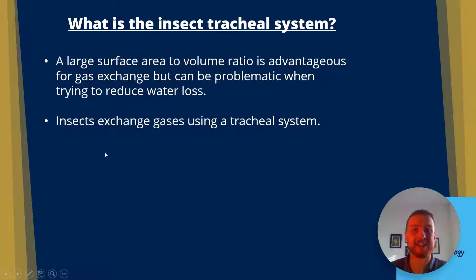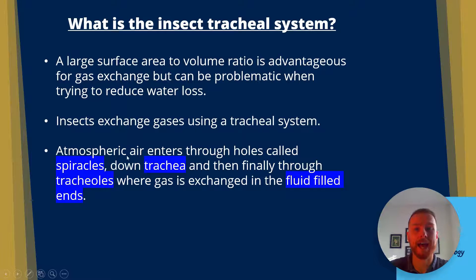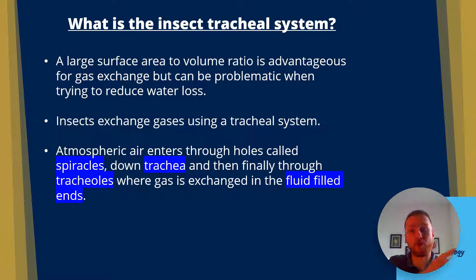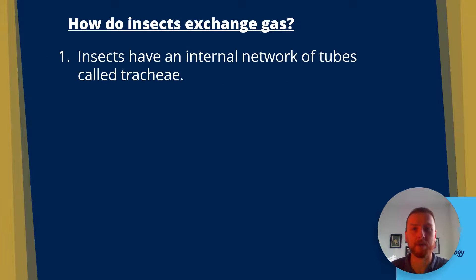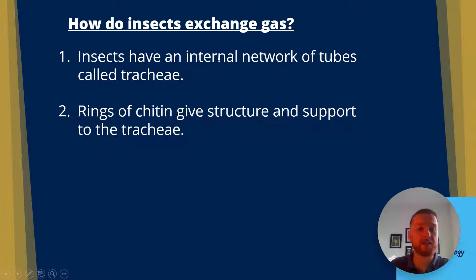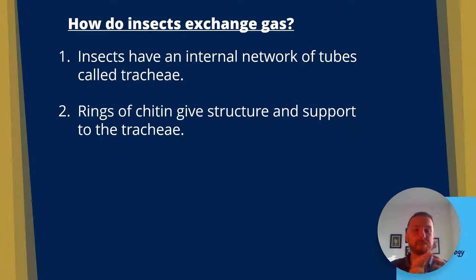Insects exchange gases using a tracheal system. Atmospheric air enters through holes in the side of them called spiracles. They then go down trachea and then finally through tracheals where gas is exchanged in the fluid-filled ends. Insects have an internal network of tubes called tracheae. Rings of chitin, which is a type of protein — the protein you'll find in the exoskeleton of insects — gives structure and support to the tracheae.